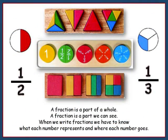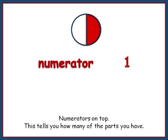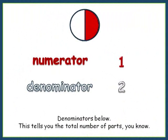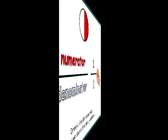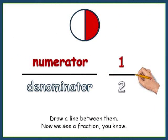A fraction is a part of a whole. A fraction is a part we can see. When we write fractions, we have to know what each number represents and where each number goes. Numerators on top — this tells you how many of the parts you have. Denominators below — this tells you the total number of parts you know. Draw a line between them, now we see a fraction you know.